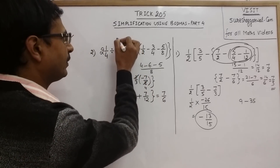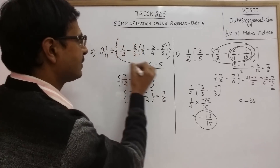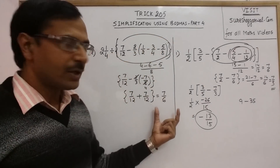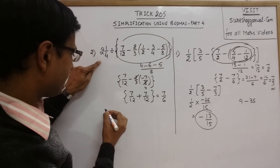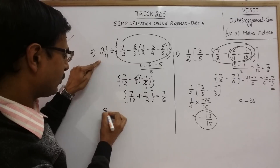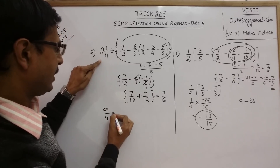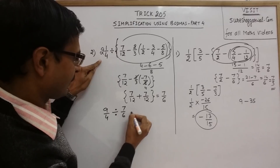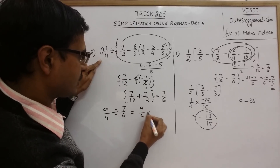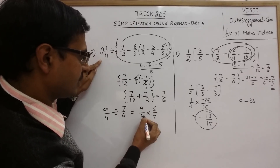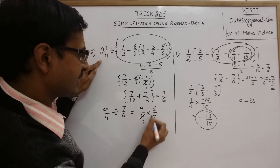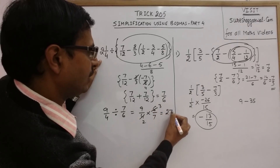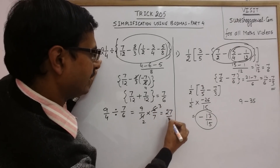The entire problem up to this point is solved and we have 7/6. For the final step: 2 and 1/4 is 9/4, divided by 7/6, which equals 9/4 × 6/7. Cancelling gives 2 and 3, so the final answer is 27/14.